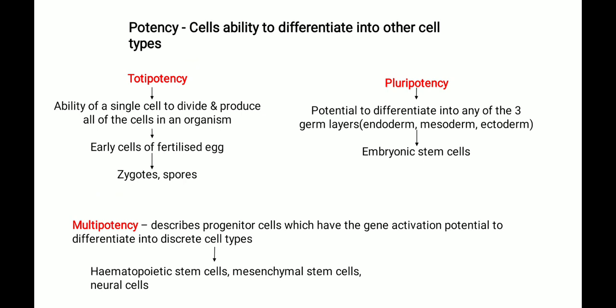Neural cells also differentiate into connective tissues, cartilage, bone, and skeletal tissue — these form mesenchymal cells. Totipotency is the ability of a single cell to divide and produce all of the cells in an organism, meaning from one totipotent cell we can form a whole organism.